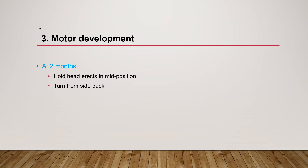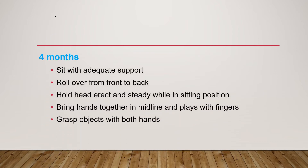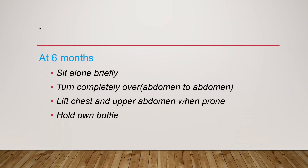Motor development from two to six months: at two months, they hold their head erect in mid-position and turn from side to back. At three months, they hold their head erect and steady, open and close hands loosely, and hold objects placed in their hand. At four months, they sit with adequate support, roll over from front to back, hold their head erect in sitting position, and grasp objects with both hands. At five months, they balance their head well when sitting, sit with slight support, pull feet to mouth when supine, and grasp objects with the whole hand.